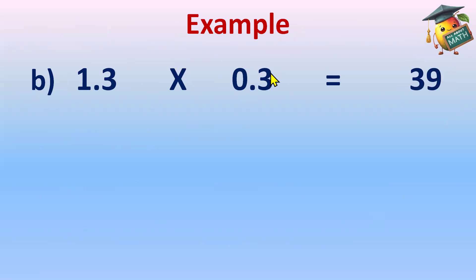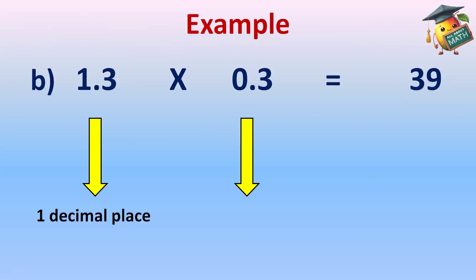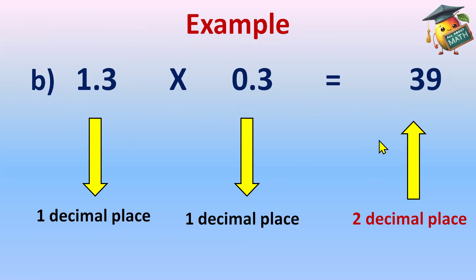Now count the decimal places. After decimal, one place in 1.3, and after decimal, one digit, so one place in 0.3. So one decimal place for 1.3 and one decimal place for 0.3. So in total in the question, we have two decimal places. So the decimal will come after two digits. And before the decimal, there is no digit, so 0 will be written. So the answer is 0.39. 1.3 multiply 0.3 is 0.39.